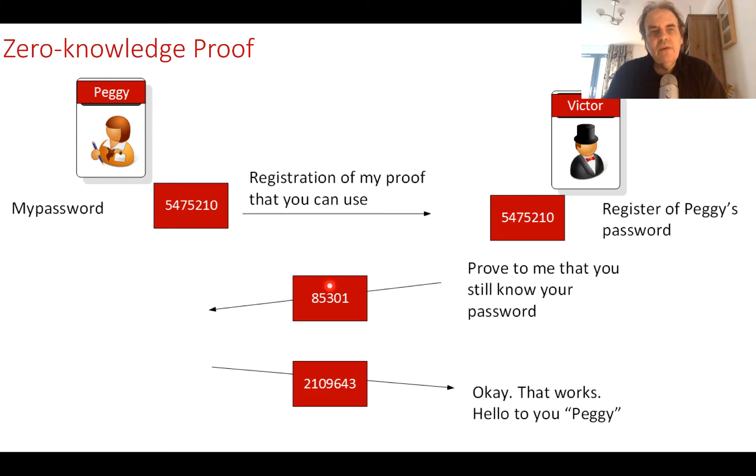When Peggy wants to log in, Victor sends a challenge. It becomes fairly easy for Peggy to produce the response to the challenge. She sends it back, Victor checks it, and it's okay. It is far too difficult for Eve to be able to generate the correct response, even though Eve can see these values.